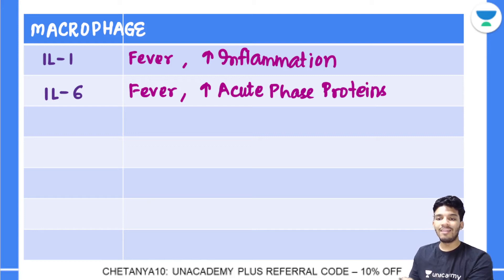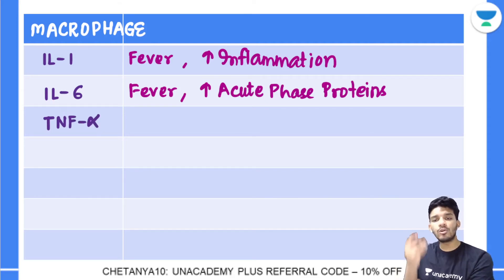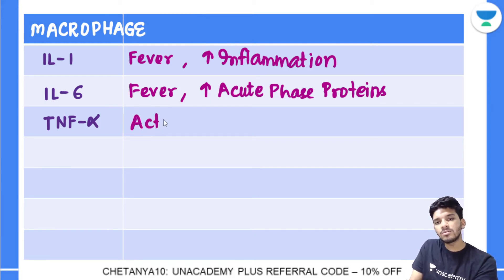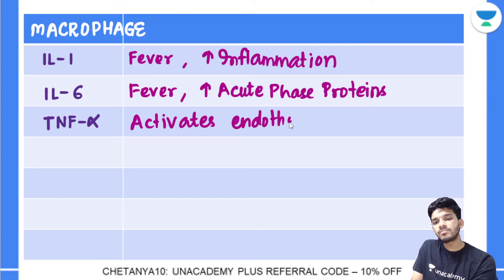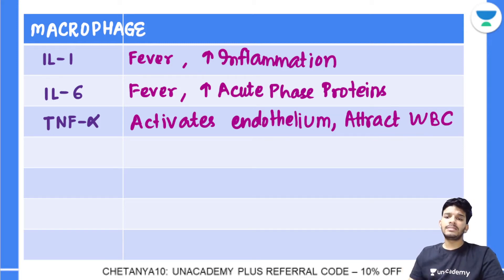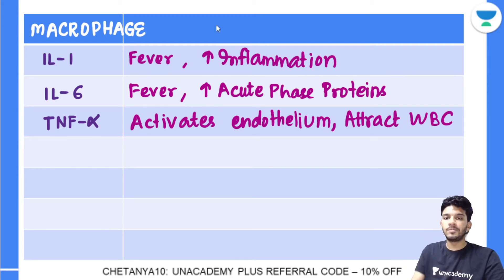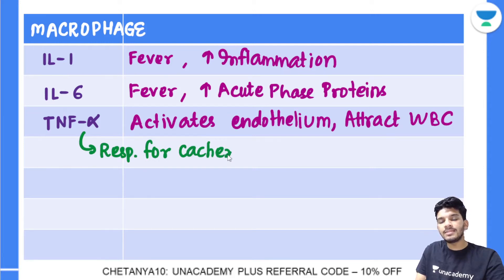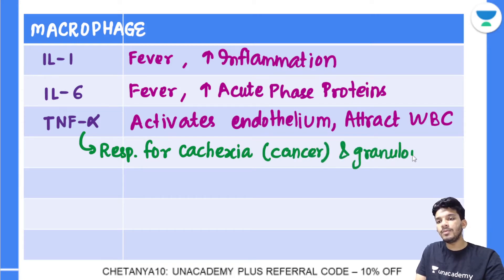TNF-alpha is another cytokine released by macrophages. It's a pro-inflammatory cytokine that activates the endothelium and attracts WBCs for the inflammatory response. Very importantly, TNF-alpha is responsible for cachexia in malignancy and for the maintenance of granulomas in tuberculosis.